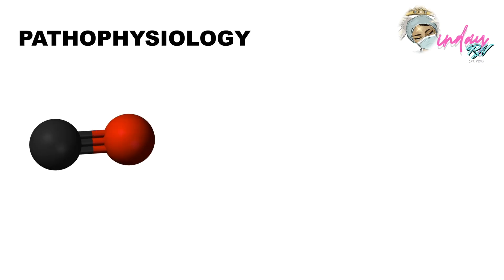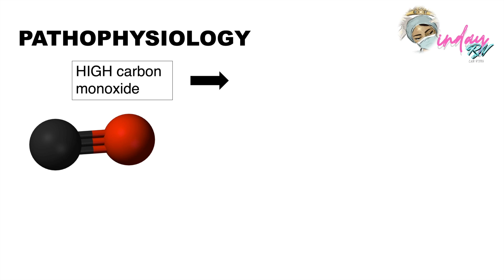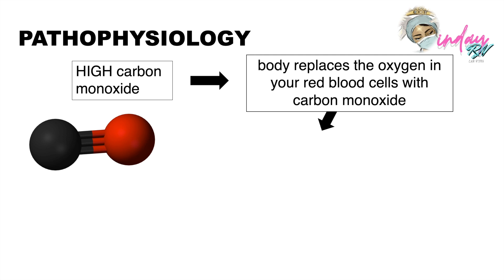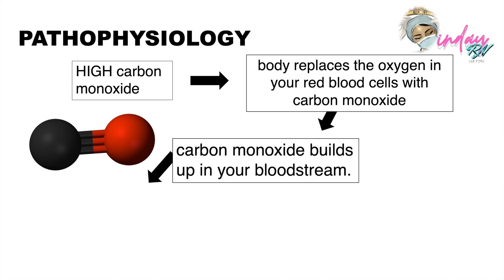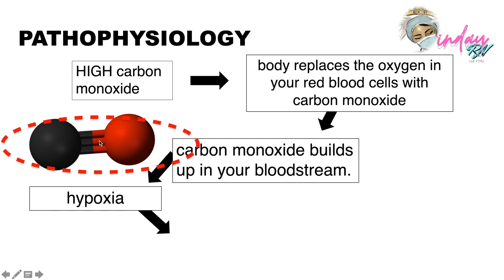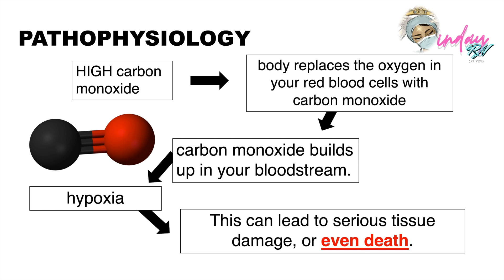Let's discuss the pathophysiology of carbon monoxide entering the patient's bloodstream. If the patient is exposed to burns or any carbon monoxide-related source, that carbon monoxide will be inhaled. Once inhaled, the body replaces the oxygen — especially in the red blood cells — with carbon monoxide, so there is a binding involved. Once carbon monoxide builds up in the bloodstream, the red blood cells turn from red to black because there is decreased oxygen and increased carbon monoxide, causing hypoxia. This leads to serious tissue damage or even death — primarily tissue anoxia, which leads to more severe health problems.